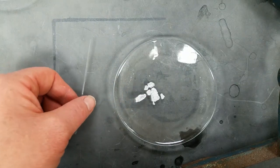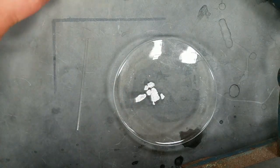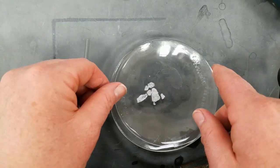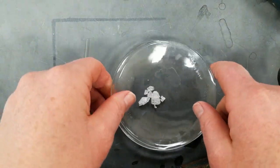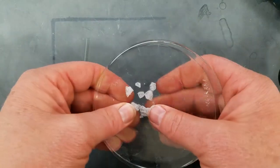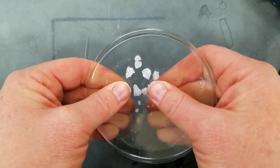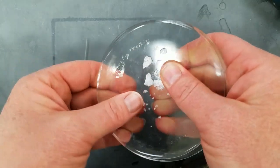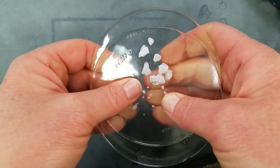The first thing we need to do is crush our solid so that we can get it into that little tube. There's lots of different ways to do this. You can use a mortar and pestle or we can use two watch glasses to crush it into smaller pieces.